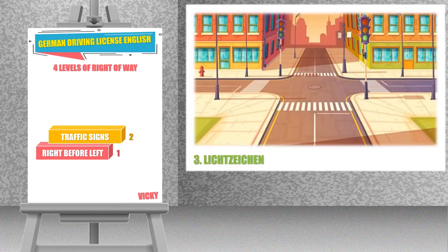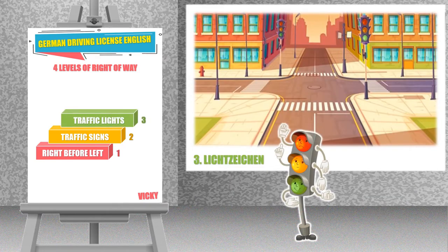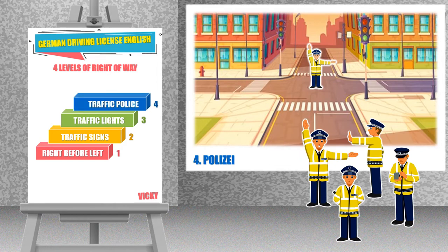On top of the traffic signs, we have Lichtzeichen or Ampelanlagen — the traffic light systems. The traffic light systems override the first two levels, i.e. right before left and the traffic signs. Above all these three levels, we have Fahrzeugpolizist, a traffic police regulating traffic. Wherever you see a traffic police controlling the traffic, their directions have the topmost priority and override all the other three levels: right before left, traffic signs, and traffic signals.